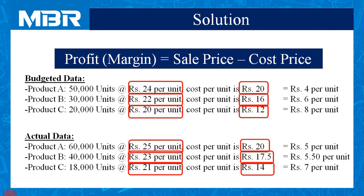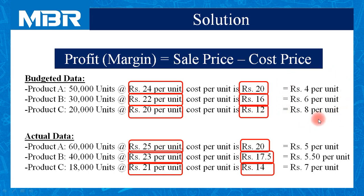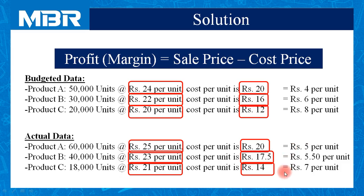Now, using the figure of profit available to us for budgeted data — Rs. 4, Rs. 6 and Rs. 8 — and in case of actual data — Rs. 5, Rs. 5.5 and Rs. 7 per unit — we need to prepare our table.